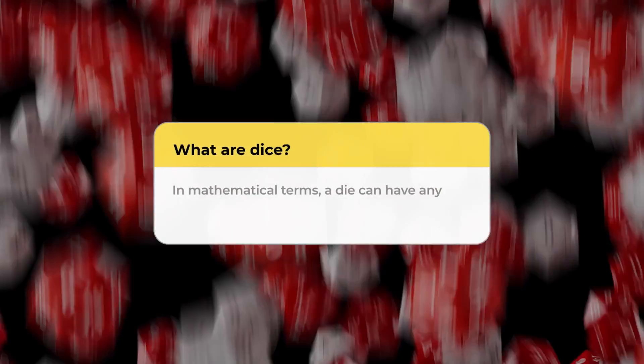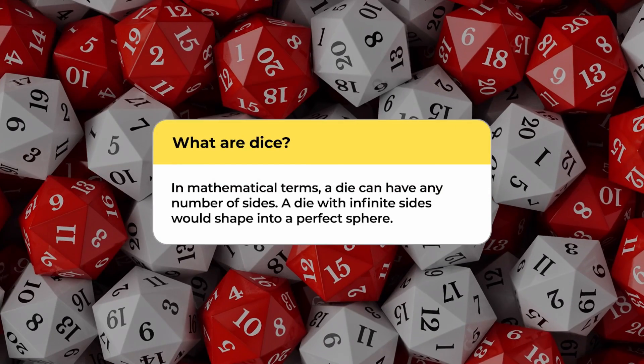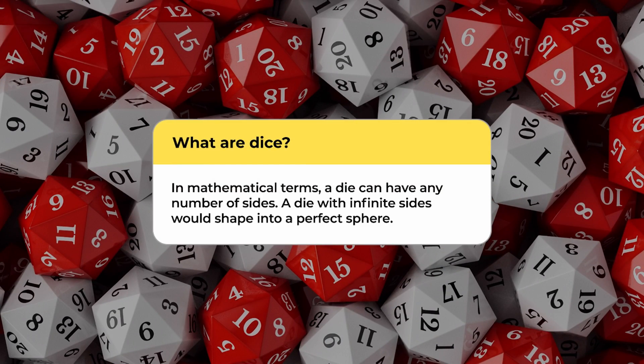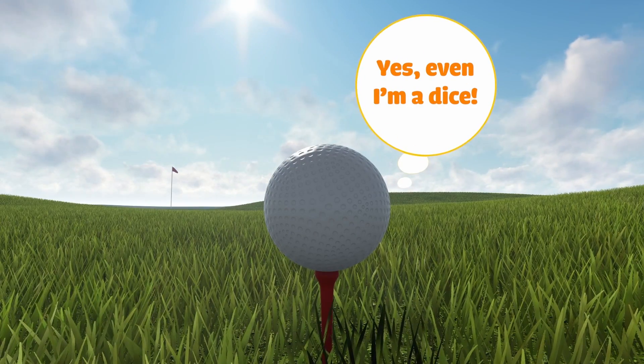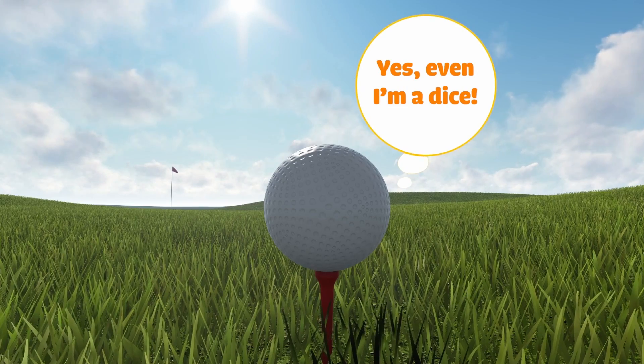So what are dice exactly? In mathematical terms, a die can have any number of sides. Going to the extreme, a die with infinite sides would shape into a perfect sphere. Through that same lens, golf balls technically qualify as dice, though they probably wouldn't make for very fair gameplay.